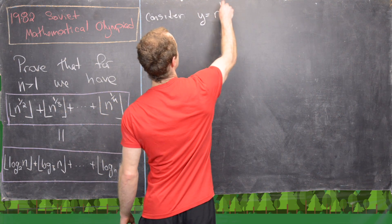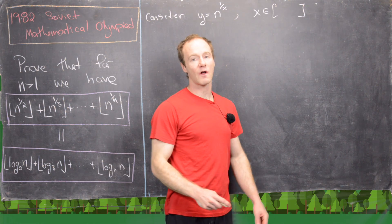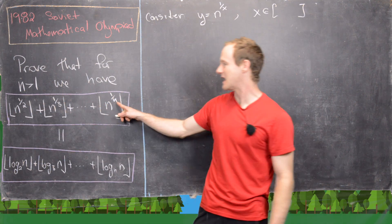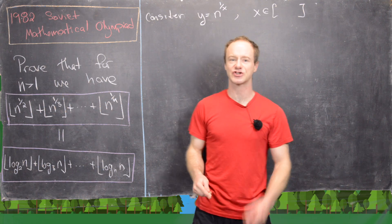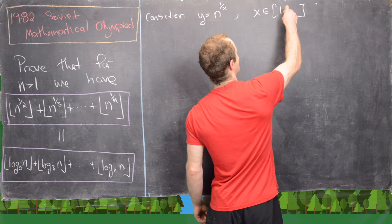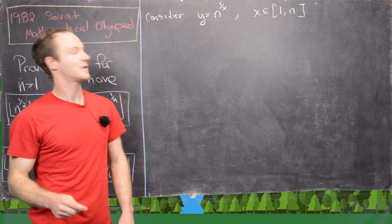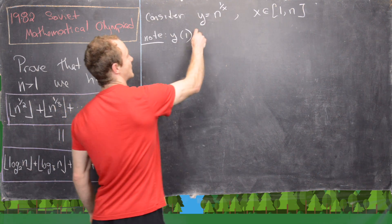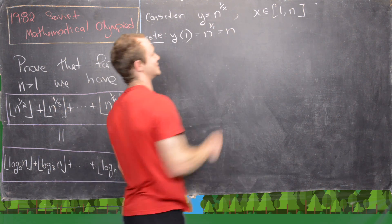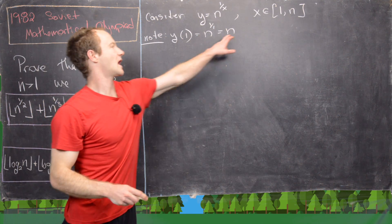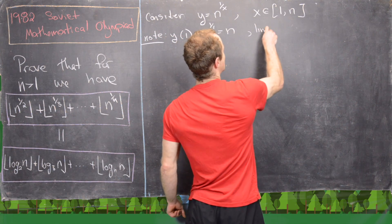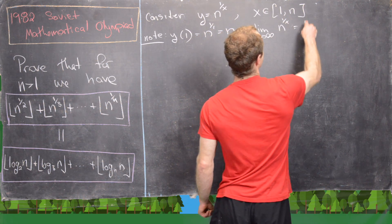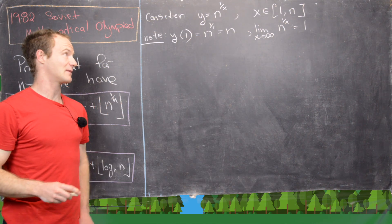We let y = n^(1/x), and we need a closed interval for x. It might make sense to take x between 2 and n, since those are the exponents appearing, but for our purposes it'll be best to expand that to 1 to n. If we plug in x = 1, we get n^(1/1) = n, so the point (1, n) is on the graph. And the limit as x goes to infinity of n^(1/x) equals 1, which is easy to check.